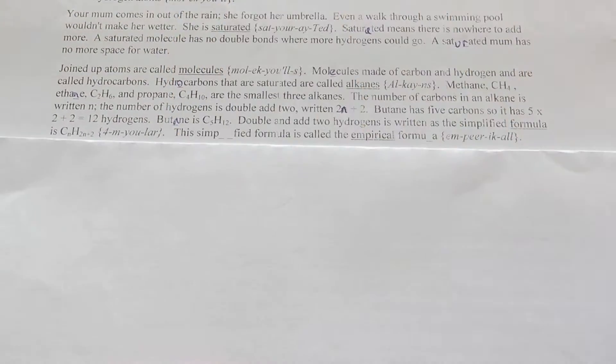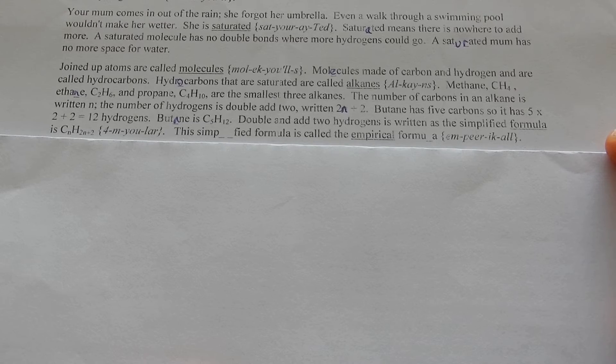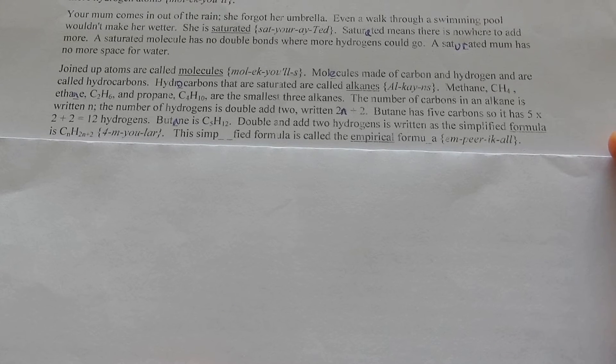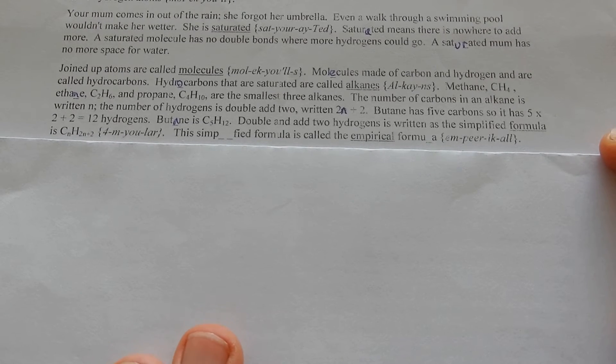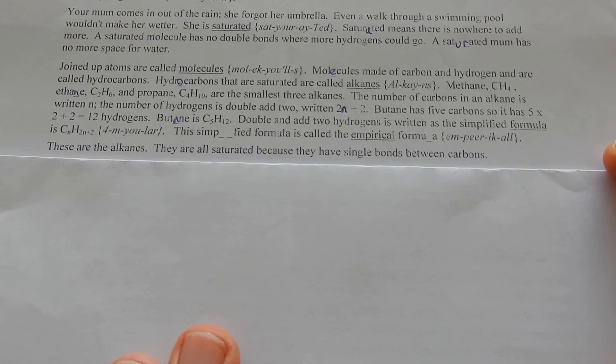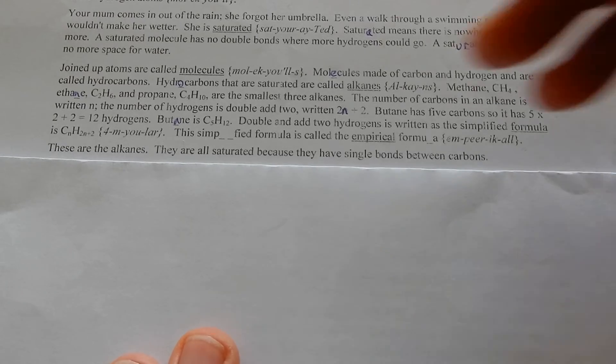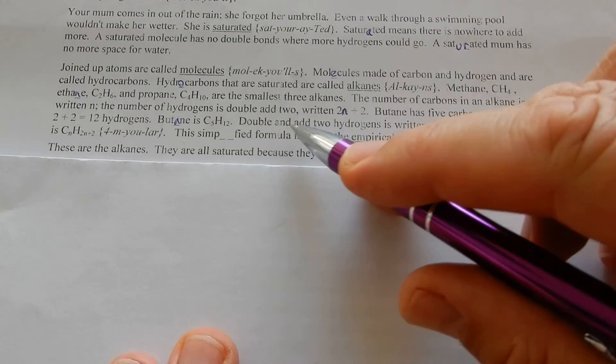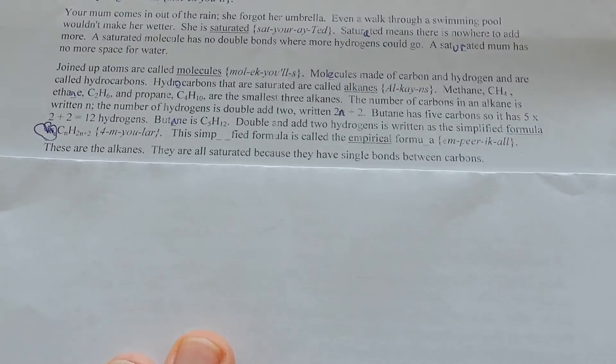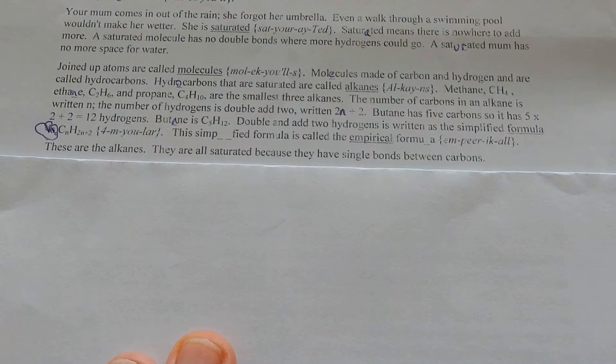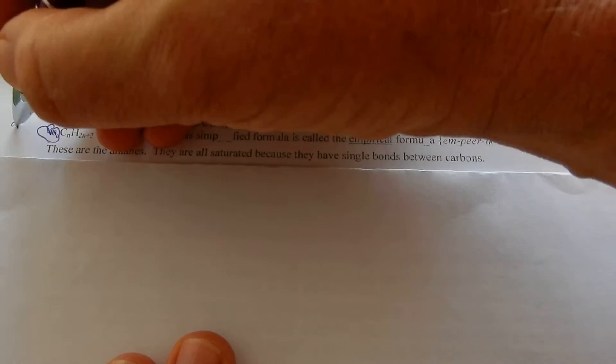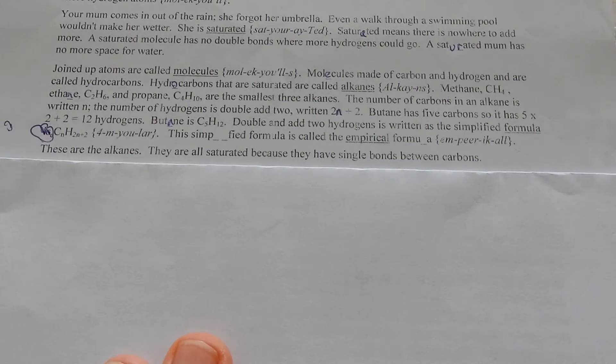Butane is C5H12. There's the 12 hydrogen. Double and add two hydrogens is written as the simplified formula. Double and add two.